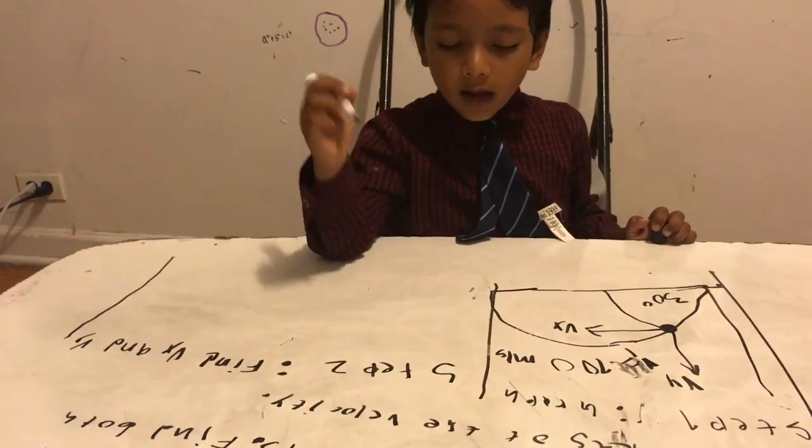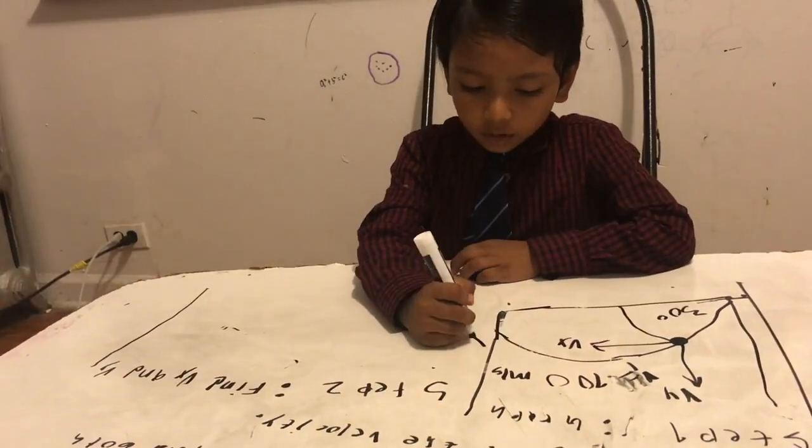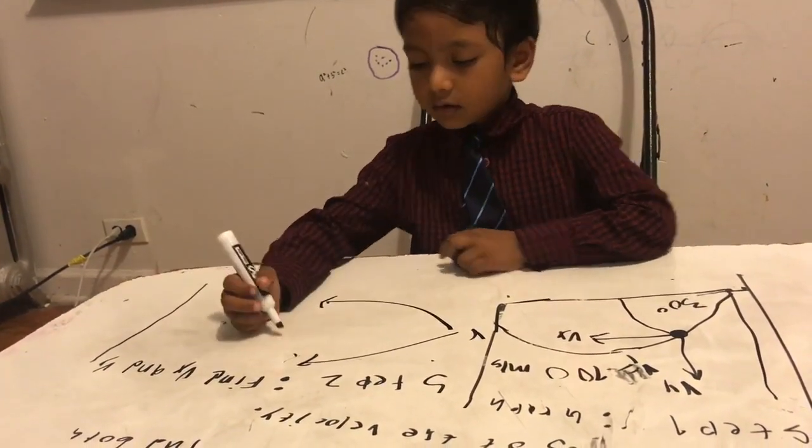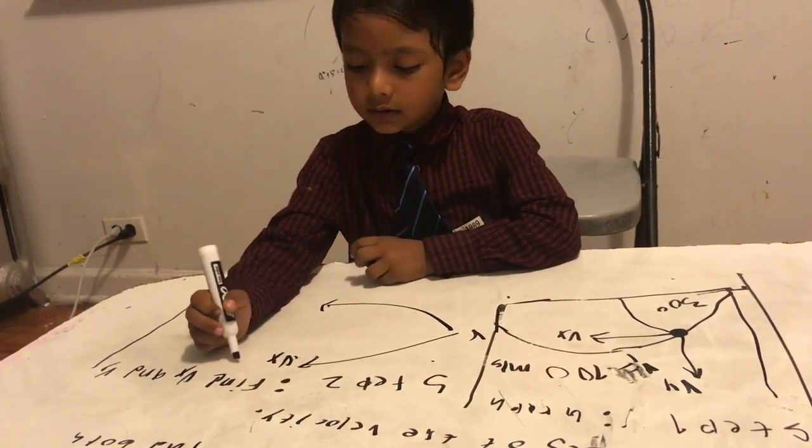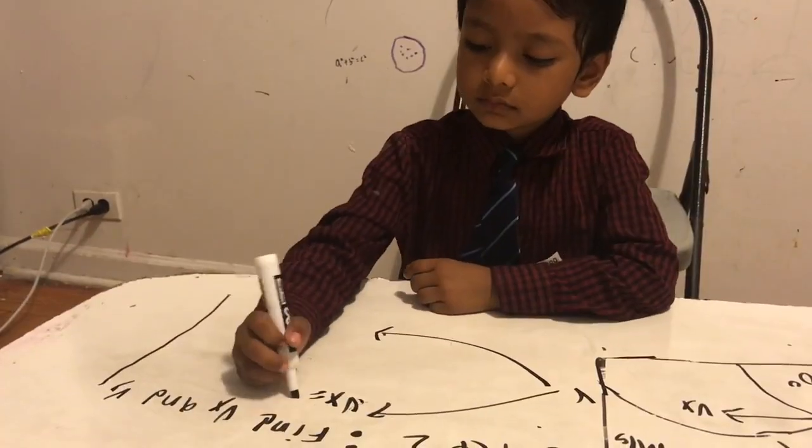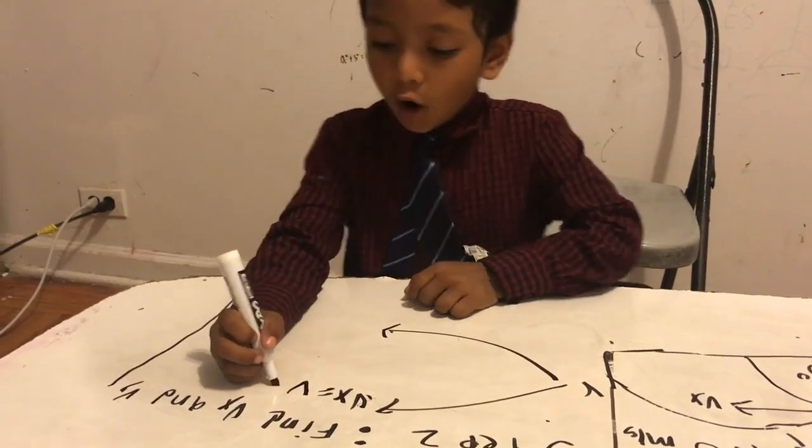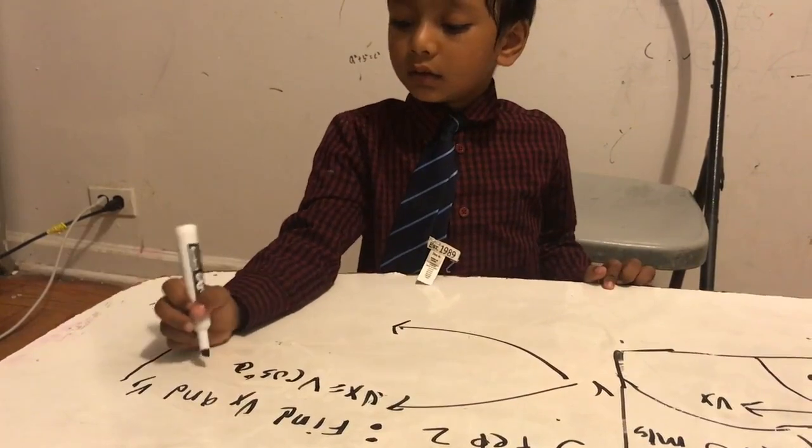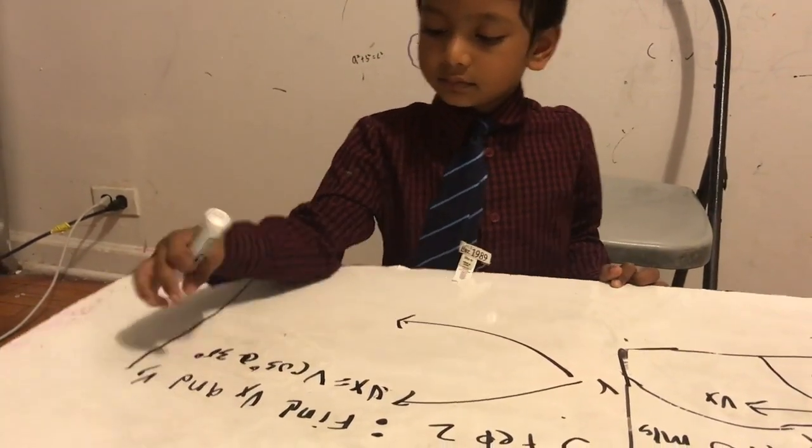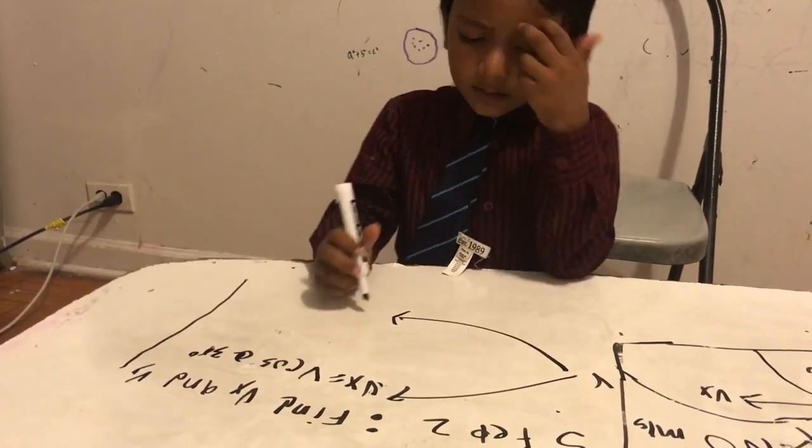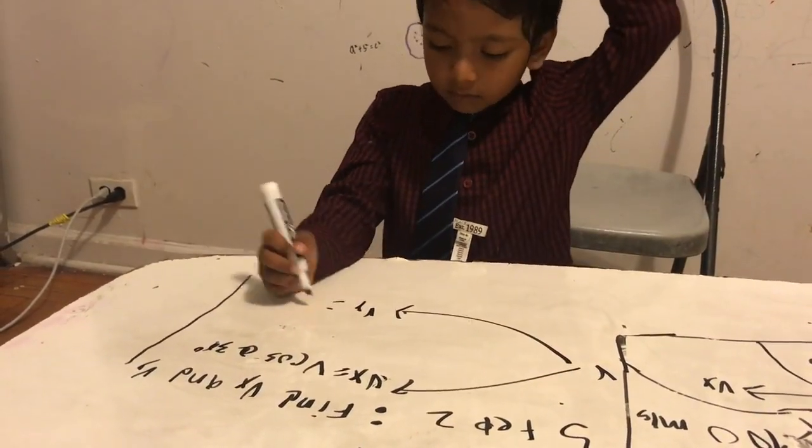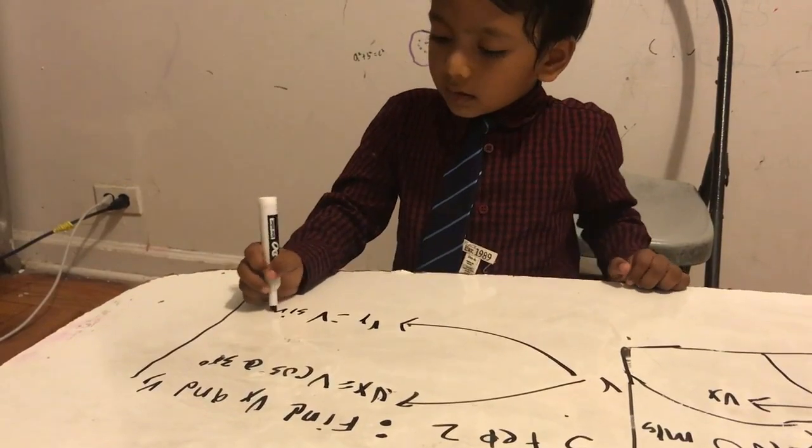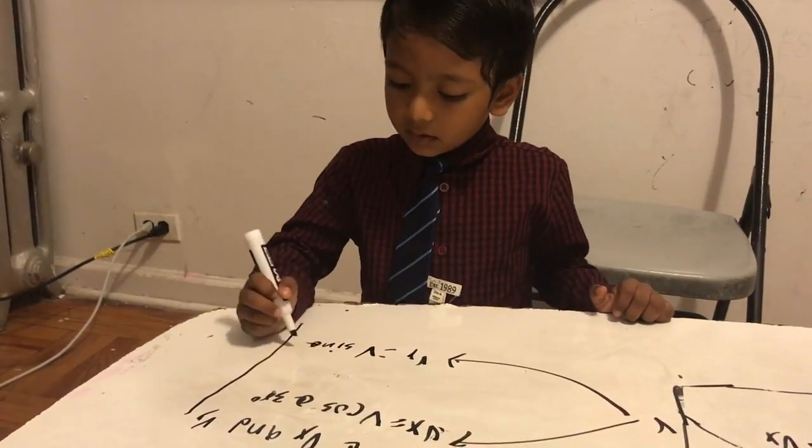So velocity goes in two ways. Velocity x is equal to velocity times cosine theta, 30 degrees. And velocity y is equal to velocity times sine theta, 30 degrees.